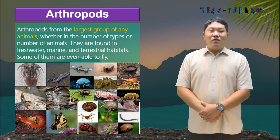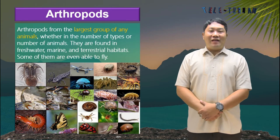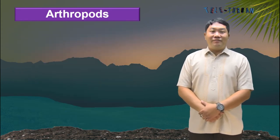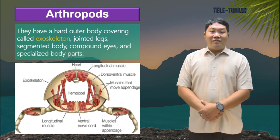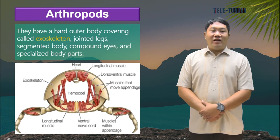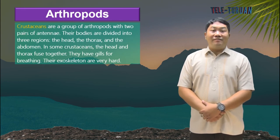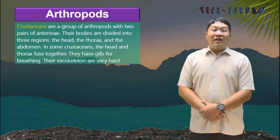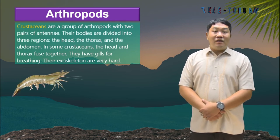Arthropods are the largest group of animals, whether in number of types or number of individuals. They are found in freshwater, marine, and terrestrial habitats, and some are even able to climb. All arthropods share common characteristics: a hard outer covering called an exoskeleton, jointed legs, a segmented body, compound eyes, and specialized body parts. Crustaceans are a group of arthropods with two pairs of antennae. Their bodies are divided into three regions — the head, the thorax, and the abdomen — though in some crustaceans the head and thorax fuse together. They have gills for breathing and very hard exoskeletons. Well-known crustaceans include shrimps, crabs, and lobsters.